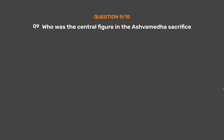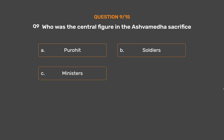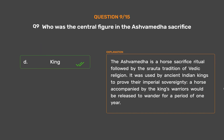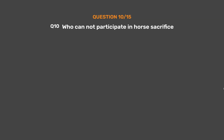Question No. 9. Who was the central figure in the Ashwamedha sacrifice? Option A: Purohit. Option B: Soldiers. Option C: Ministers. Option D: King. The correct answer is Option D: King. The Ashwamedha is a horse sacrifice ritual followed by the Shrauta tradition of Vedic religion. It was used by ancient Indian kings to prove their imperial sovereignty. A horse accompanied by the king's warriors would be released to wander for a period of one year.